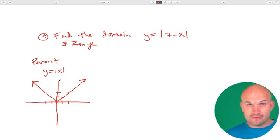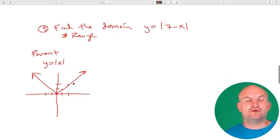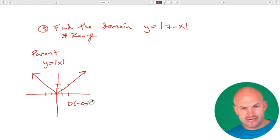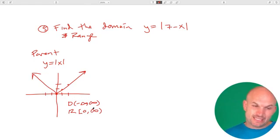So automatically from understanding this parent graph, we can recognize a couple things. The domain here is going to be all real numbers, because this graph expands to the left and to the right. And the range in this case is going to be from 0 to infinity. Make sure 0 is included, and then it's going up to infinity.